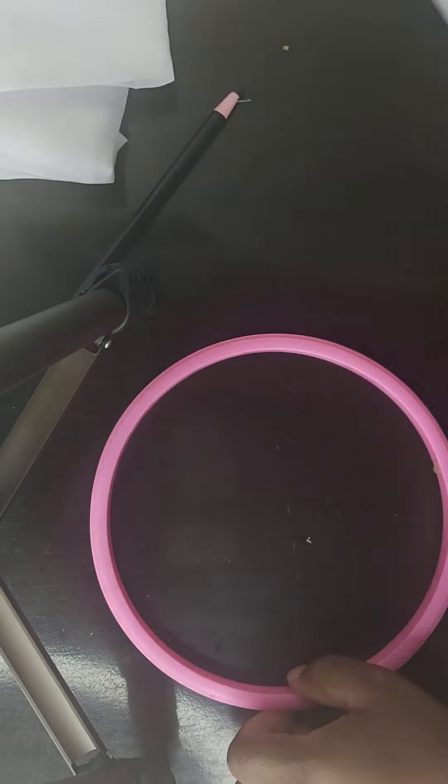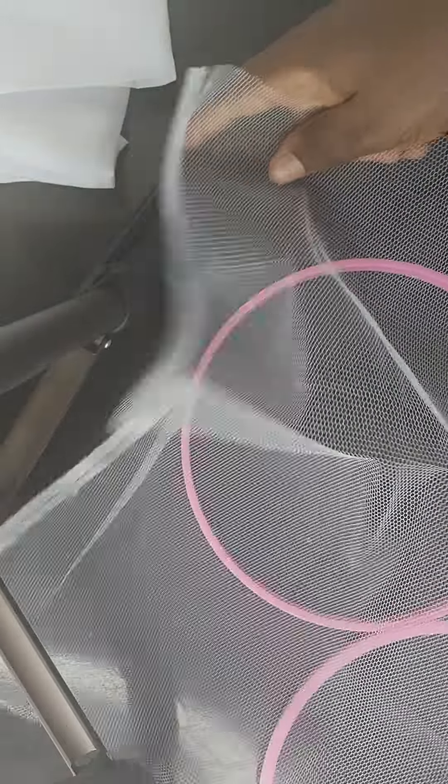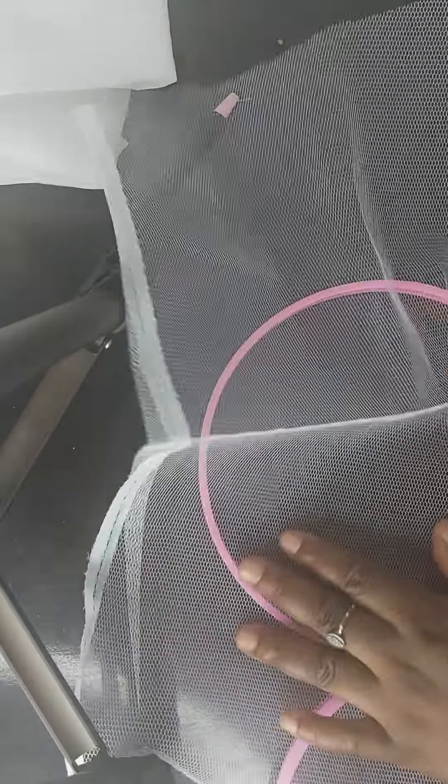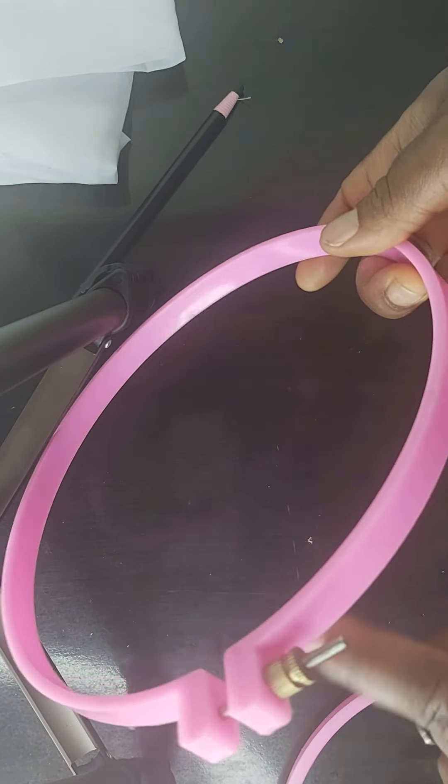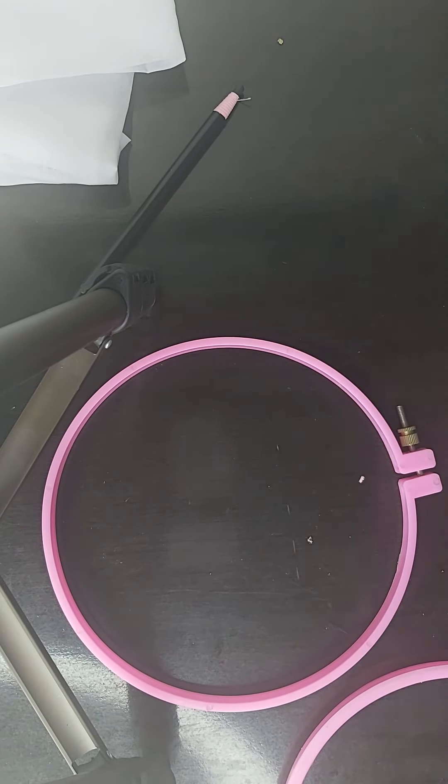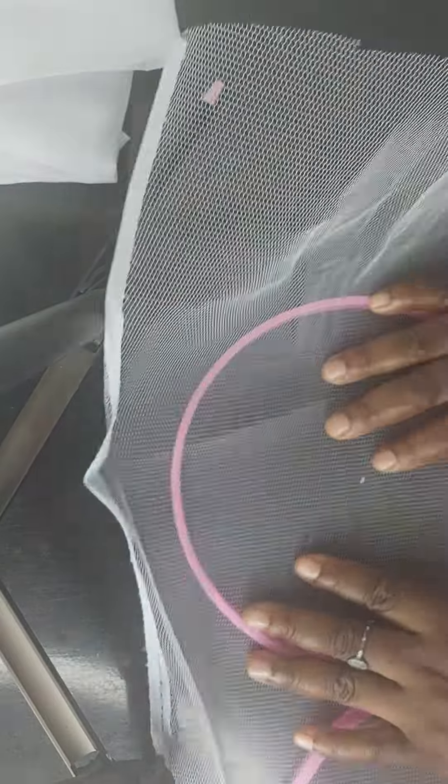Now this is our tambour frame. I'm going to show you how to mount this tambour frame. We'll start off first with our tulle net. So you open it. The one with this loop, face it down like this. Then place your fabric above it.